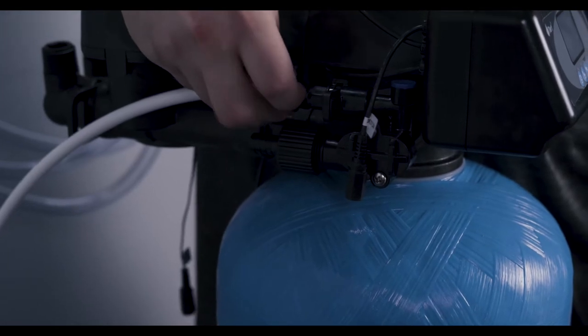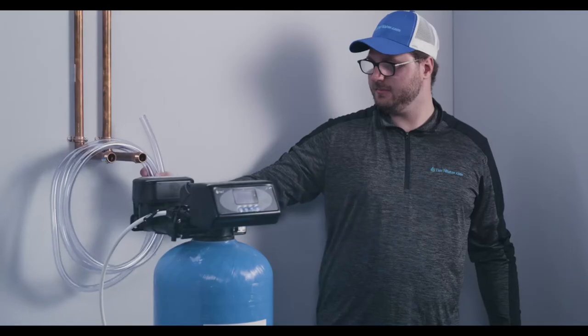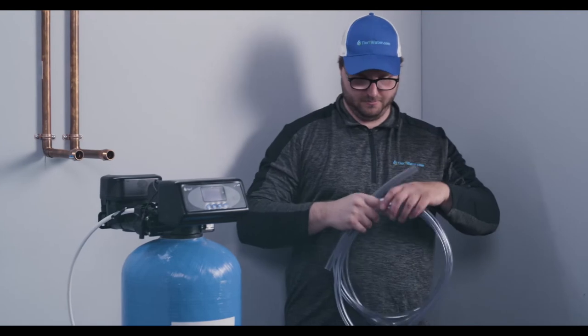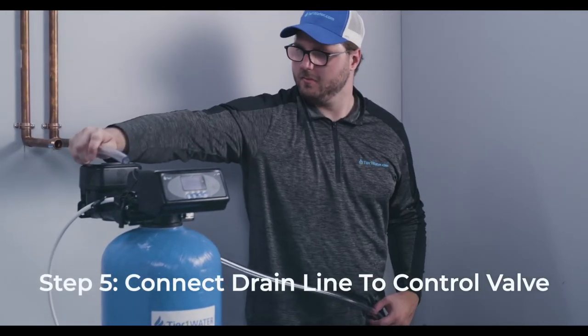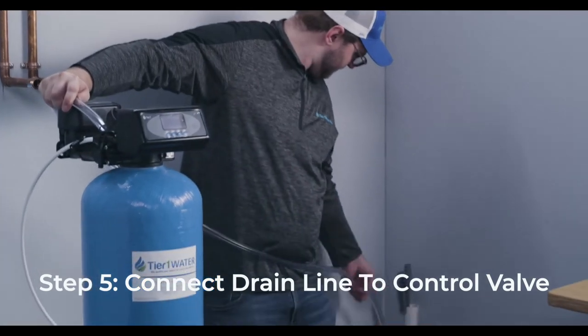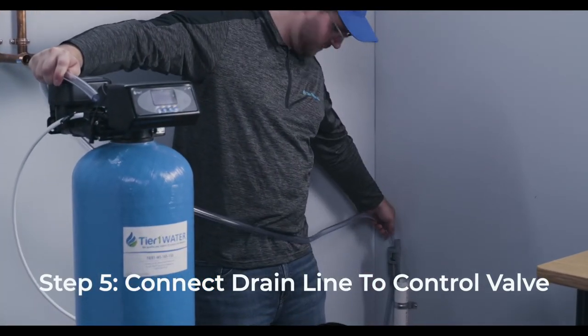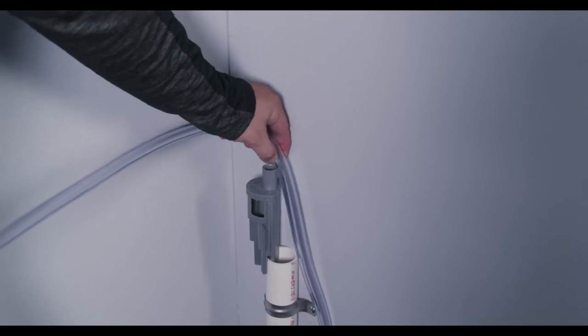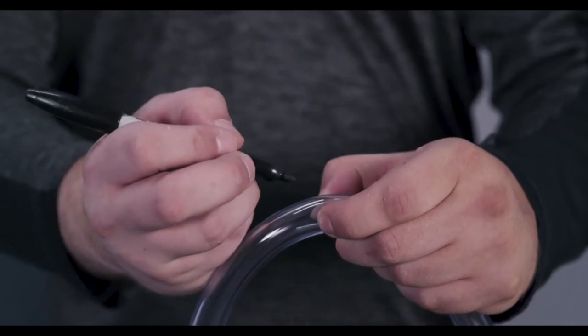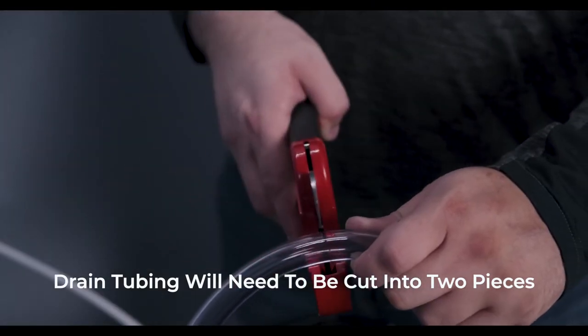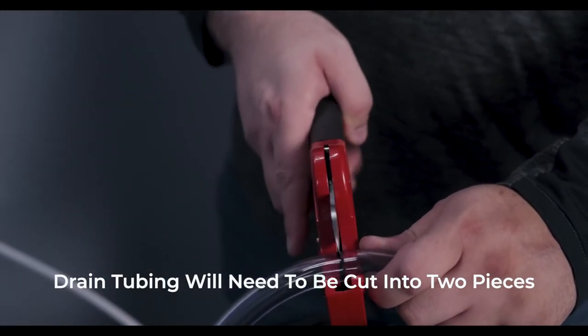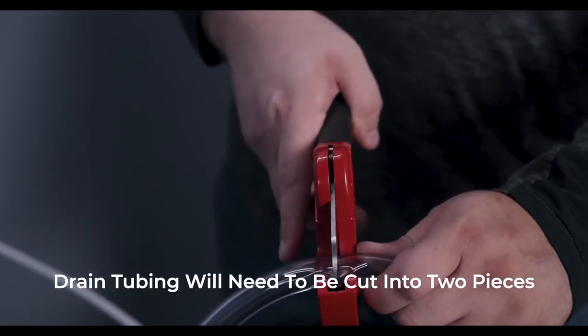The system is provided with one 10 foot length of clear drain tubing. You will need to cut it into two pieces, one for the brine tank overflow line and one for the resin tank drain line. You should measure the length you need for the drain line from the resin tank first, using the remainder for the brine tank overflow line. Use tube cutters to cut the tubing to make a clean cut and prevent leaking.